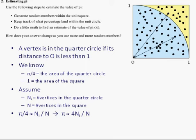We know that the ratio of the area of the quarter circle to the area of the square is π/4. It should be very close to ni over n.